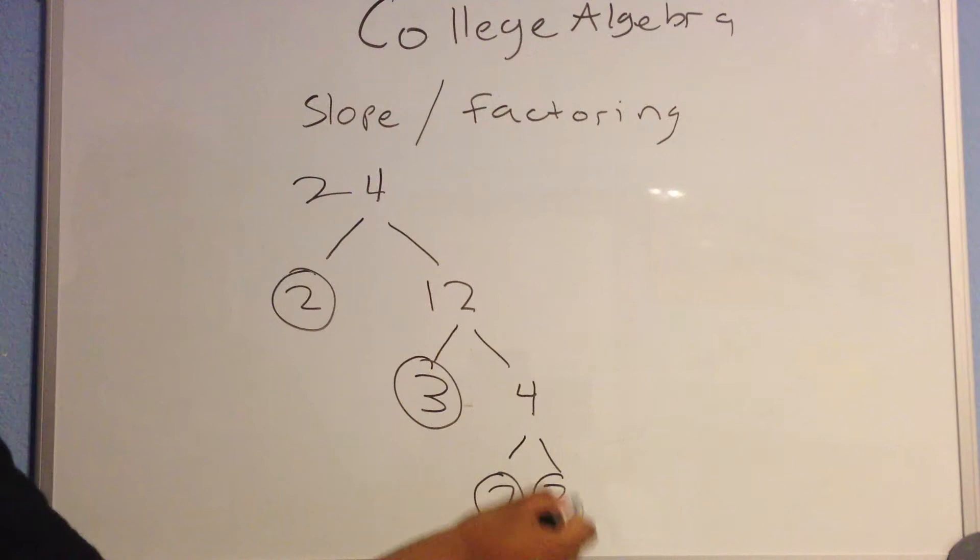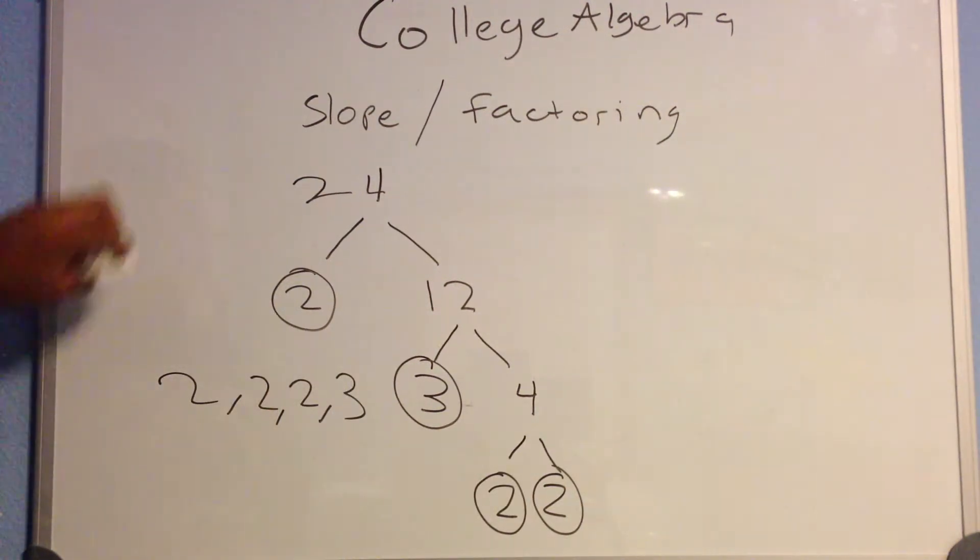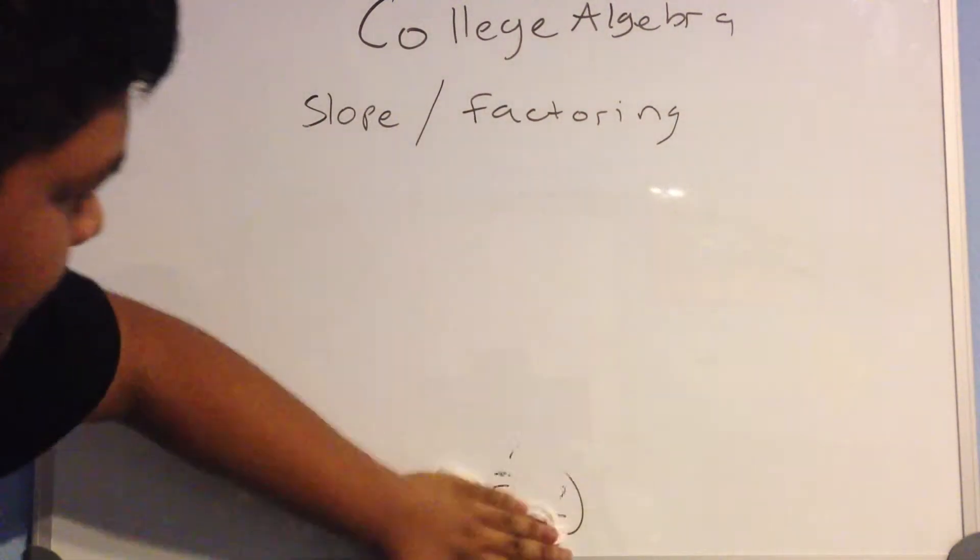The prime factors here would be 2, 2, 2, and 3. That's 24. Let's try a bigger number now for prime factorization.